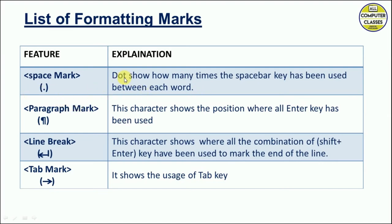If you see two dots between words, it means the spacebar was pressed twice. The paragraph mark shows the position where the Enter key has been used. The line break character shows where the combination of Shift+Enter has been used to end a line. Wherever the Tab key was used, a tab mark will appear. Let's see where we find these marks in the document.